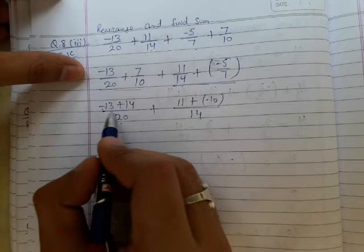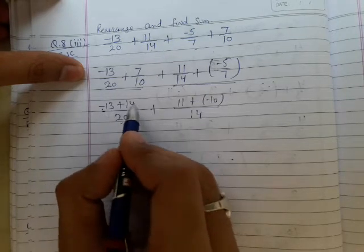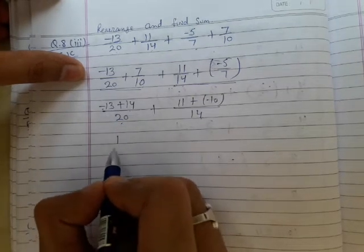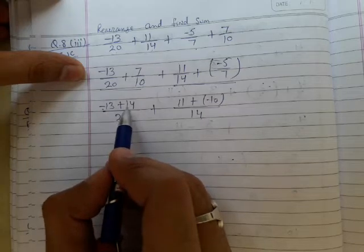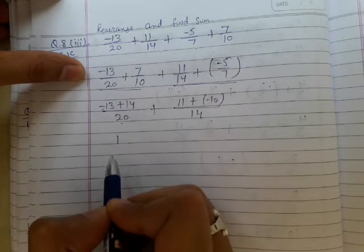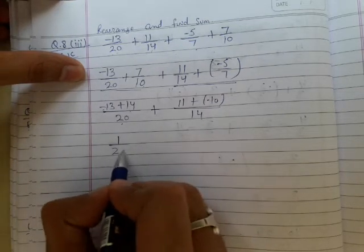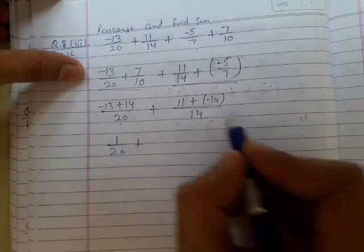For the first pair, -13 and +14 have different signs, so we take their difference, which is 1. The result is positive because 14 has the larger numerical value, so we get 1/20.